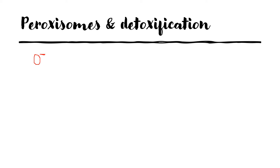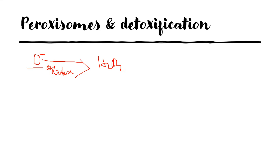These oxygen-derived free radicals, or reactive oxygen species, have a harmful effect on the cells of the body, so they need to be eliminated. In order to eliminate them, the oxidases present in the peroxisomes act on these oxygen-derived free radicals and reduce them to hydrogen peroxide. Due to this reaction, the harmful effect of the free radicals is eliminated.